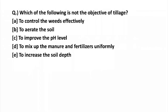The first question is: which of the following is not the objective of tillage? First of all, what exactly is tillage? Basically, it is the mechanical manipulation of the soil with tools — in easy terms, making the soil ready for the next cropping season. This is what tillage is all about.